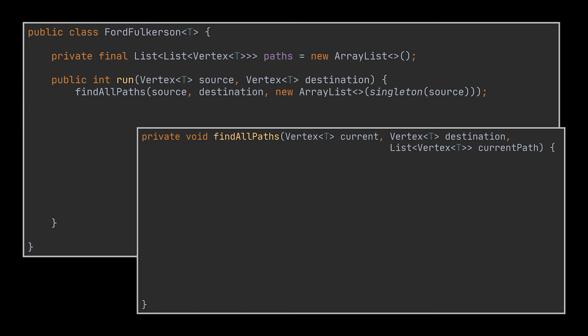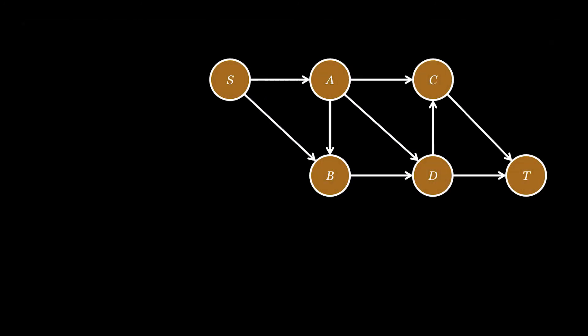To fetch these paths we're going to use recursion and make use of the helper method you see, which takes as first arguments the source, destination, and the starting path list containing at first only the source vertex. Before implementing this method, let's visualize it.